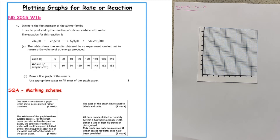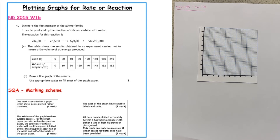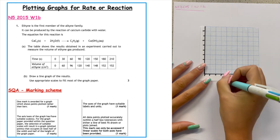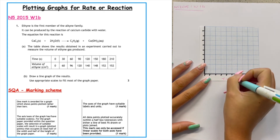This next past paper question is from National 5 2015 written 1b. We are asked to draw a graph of the student's results. The marking is out of three in the original, but the updated marking scheme gives four marks, so we'll use that new scheme provided by the National 5 SQA. If you want to have a go at this question first, pause and then press resume when ready. First, we write the correct labels and units — the factor we control always goes on the x-axis, which is time in seconds.